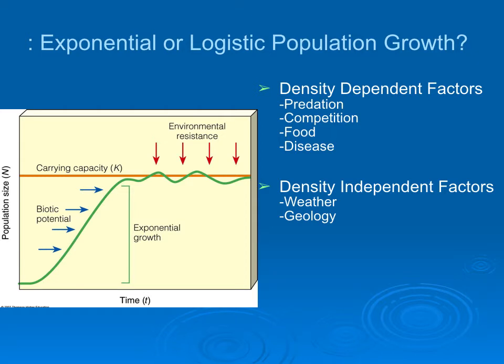Some populations look like they're in exponential growth most of the time, and it turns out they're controlled by density-independent factors. They rapidly increase in density until some factor — usually a weather event like a winter, flood, or similar — causes them to crash, then they grow exponentially again. In logistic population growth, where you reach carrying capacity, there are density-dependent factors like predators focusing on prey at high densities, competition for limiting resources, or the spread of disease — all of which are likely to happen at high density.